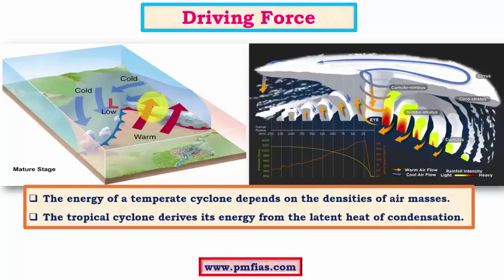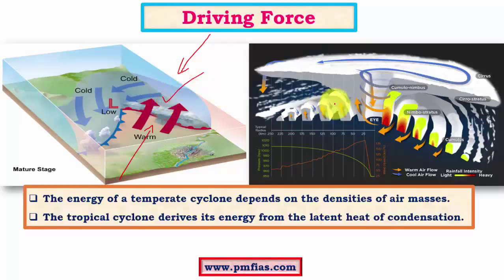The forces driving these cyclones differ: tropical cyclones receive their energy primarily as latent heat of condensation from the warm ocean surface. Temperate cyclones are driven by the density and temperature differences between warm tropical air masses and cold polar air masses. The greater the temperature and density contrast, the more intense the temperate cyclone.